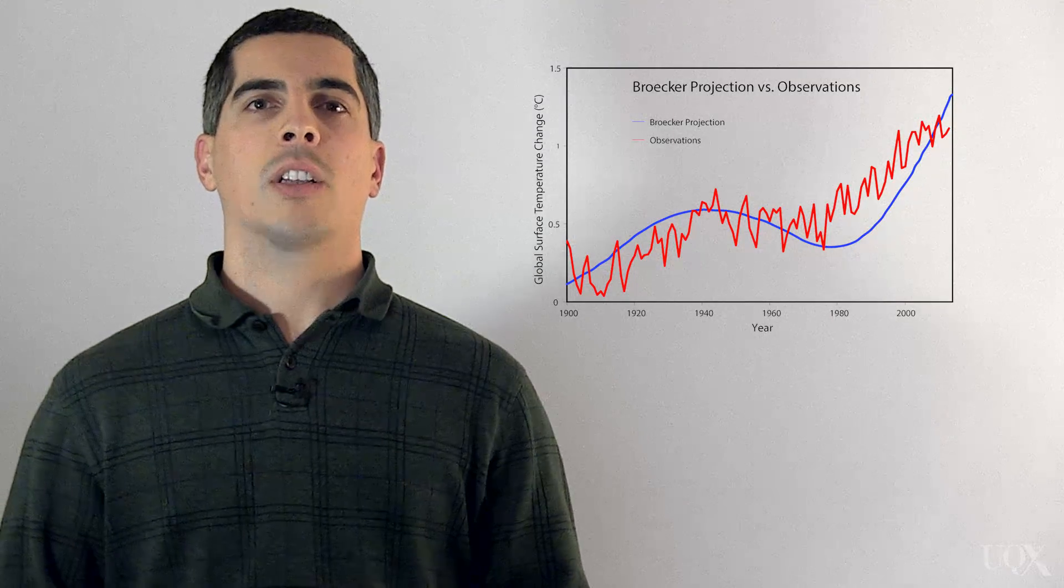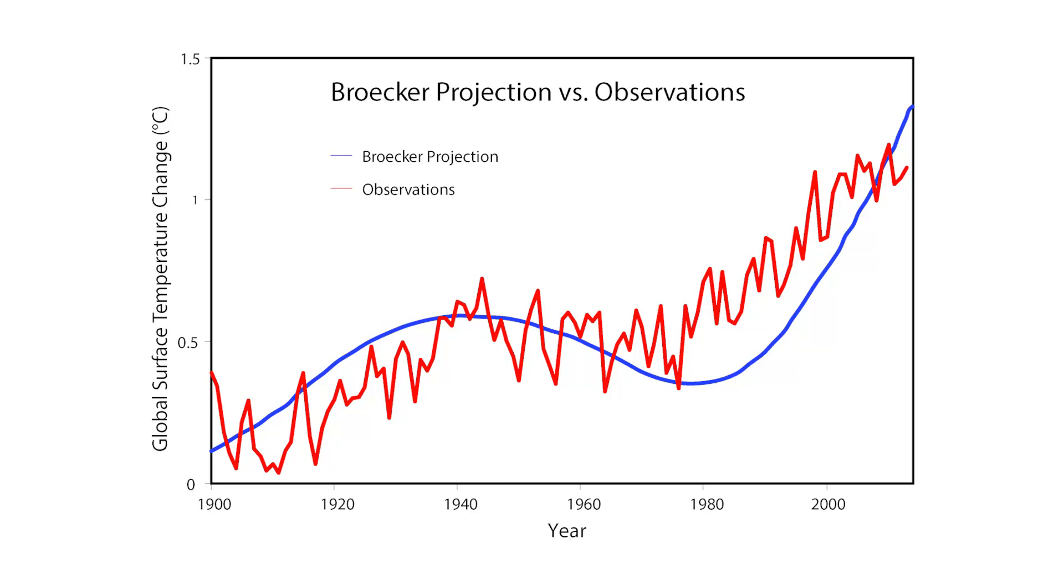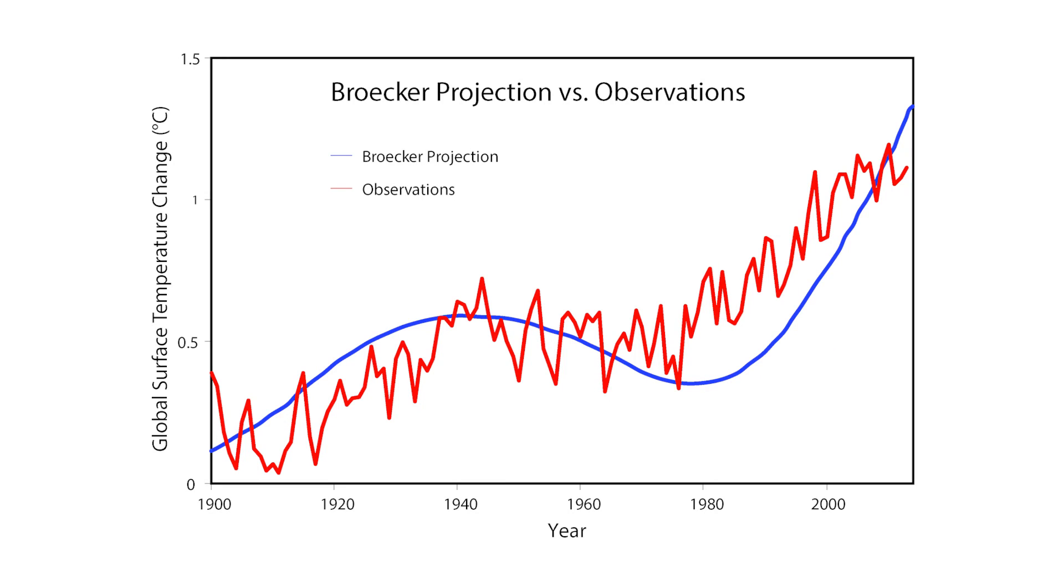In 1975, American climate scientist Wallace Broker coined the term global warming. He used a global climate model to estimate that due to rising carbon dioxide levels, between 1975 and 2015, the Earth's surface temperature would warm by about 1 degree Celsius. His estimate was about 0.3 degrees Celsius too high, but that's pretty close for a simple climate model that he was using 40 years ago.